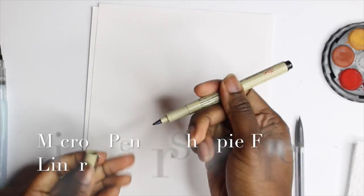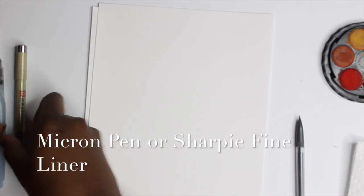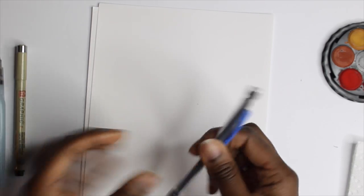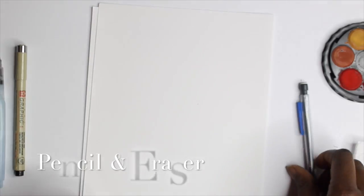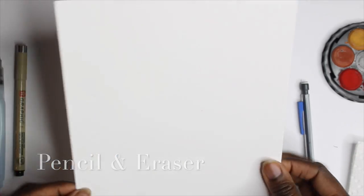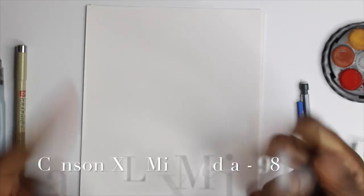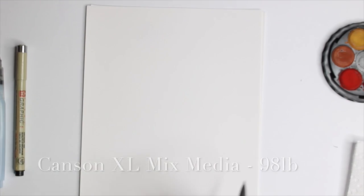You're also going to need a micron pen, any type of waterproof black pen. You can get like a Sharpie, those are really good as well. I'm using a regular pencil. You just need a pencil and eraser, and then you're going to have two sheets of paper. I'm using watercolor paper because you're able to paint without having the paper buckle.